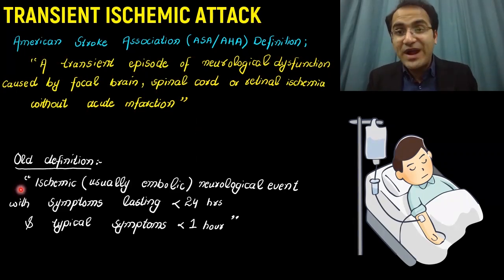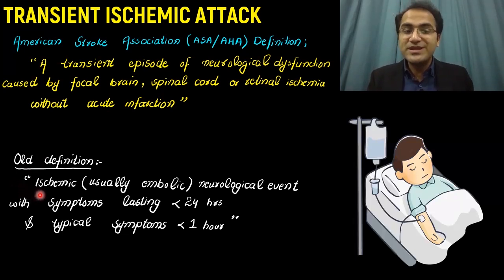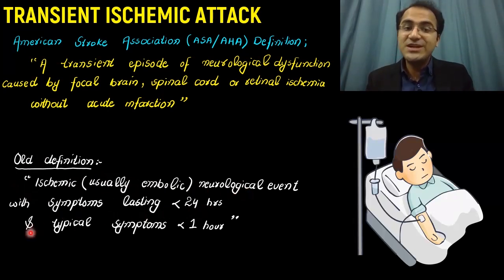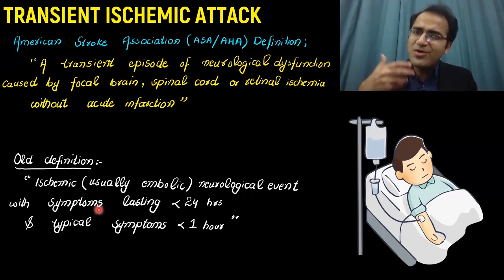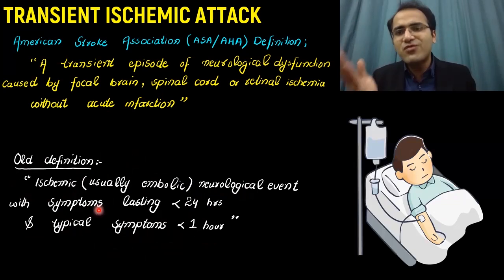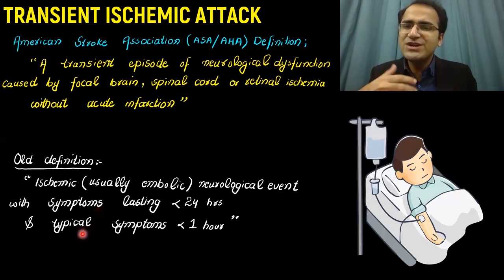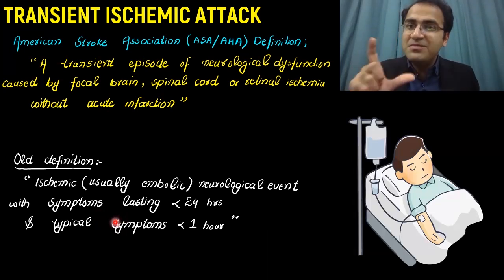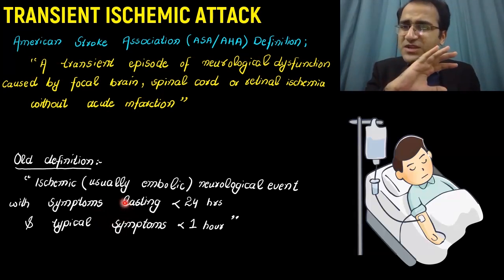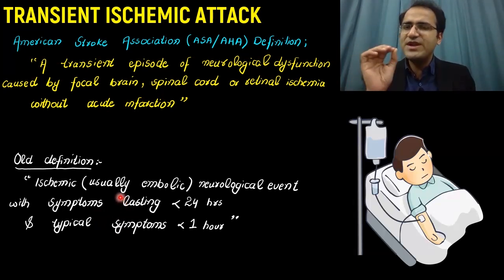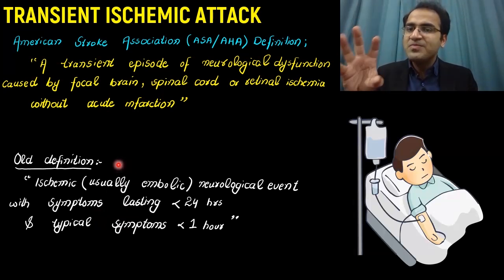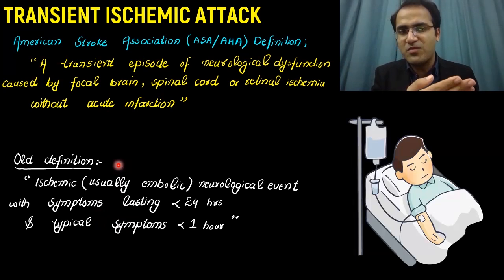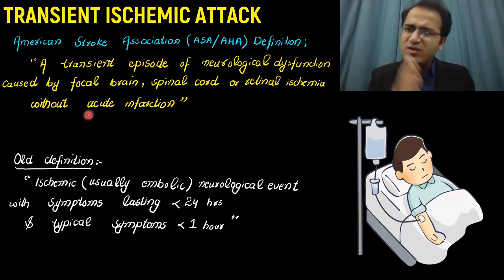The old definition for transient ischemic attack was an ischemic, usually embolic neurological event with symptoms lasting less than 24 hours and typical symptoms lasting less than one hour. The old definition provided a time limit — the patient would develop and recover from a neurological event in less than 24 hours. But in the new definition, these time limits have been removed. The only definition is that there is ischemia to the brain, it gets reversed, and the patient recovers without permanent brain injury.